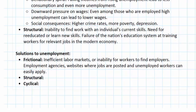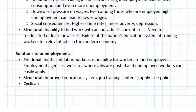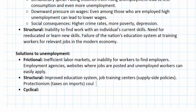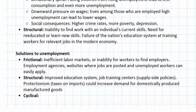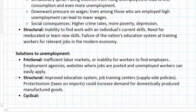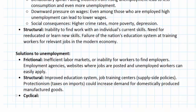Structural unemployment is a bit tougher to address. Solutions include an improved education system that trains people for jobs that actually exist in the economy today, not those that existed in previous decades, as well as job training centers. These are supply-side policies which increase the productivity of labor and make employing workers more attractive. There are also demand-side policies such as protectionism — taxes on imports — which could increase demand for domestically produced manufactured goods and thereby create more jobs in manufacturing that might otherwise have been lost.